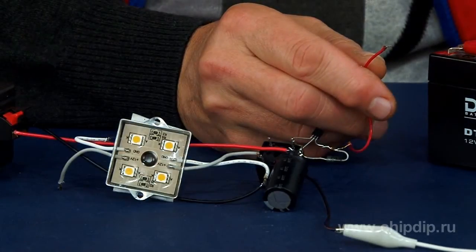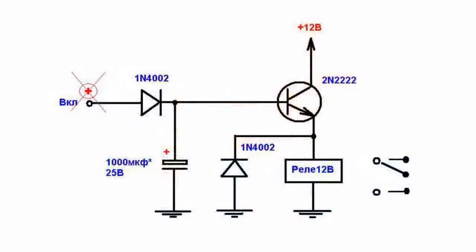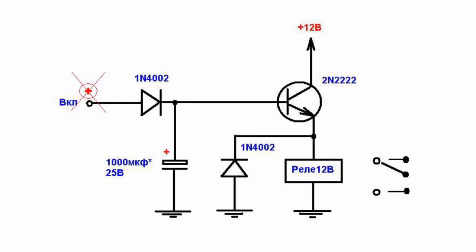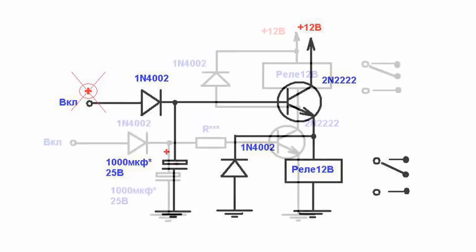The second circuit includes an additional resistor that is series connected to the transistor's base. This circuit offers a certain advantage: you can choose the resistors by rating required to ensure the desired relay switch delay time.